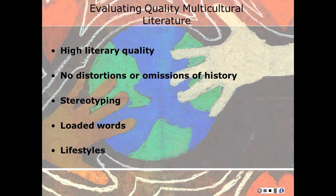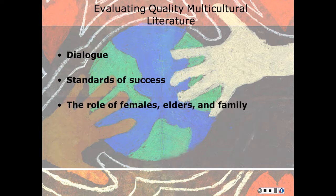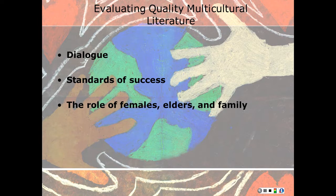Lifestyles: the lifestyles of the characters are genuine and complex, not oversimplified or generalized. Remember, a single book may not adequately portray a group of people. Dialogue: the characters use speech that accurately represents their oral tradition. Standards of success: the characters are strong and independent, not helpless or in need of the assistance of a white authority figure. Characters do not have to exhibit extraordinary qualities or do more than a white character to gain acceptance and approval.